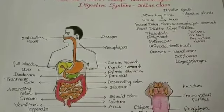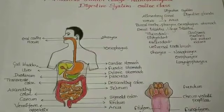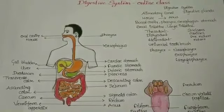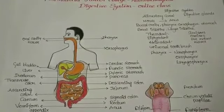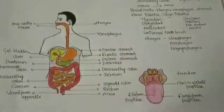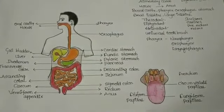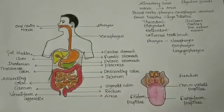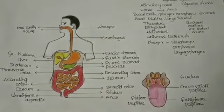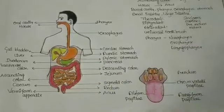The tongue is a freely movable muscular sense organ attached to the floor of the oral cavity by a fold of tissue called the frenulum. The upper surface of the tongue has small projections called papillae, some of which bear taste buds. The human tongue bears three types of papillae: fungiform papillae, circumvallate papillae, and filiform papillae.